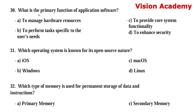Question 30: What is the primary function of application software? Option A: to manage hardware resources. Option B: to perform tasks specific to the user's need. Option C: to provide core system functionality. Option D: to enhance security. Option B, to perform tasks specific to the user's need, is the right answer.